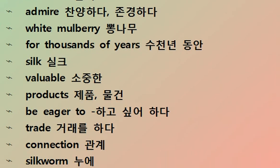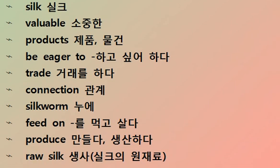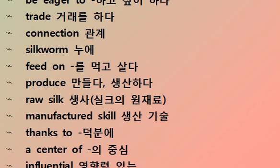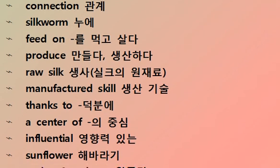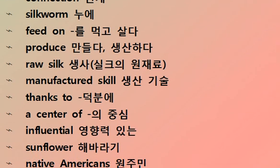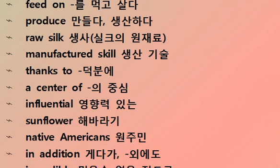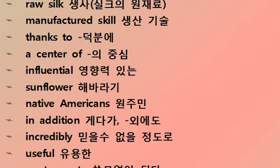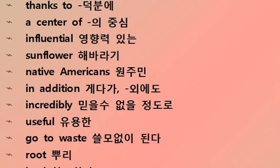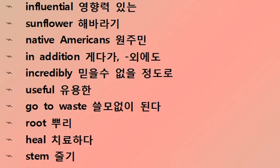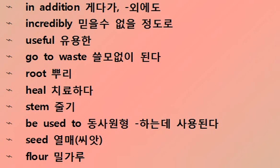White mulberry: for thousands of years, silk was among the most valuable products, and people were eager to trade. The connection was the silk road — silkworms feed on mulberry leaves, producing raw silk that was manufactured with great skill. Thanks to this, a center of influence grew. Next, the sunflower — Native Americans found it incredibly useful.